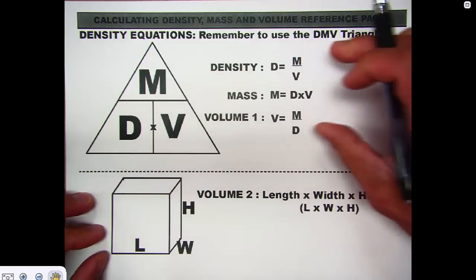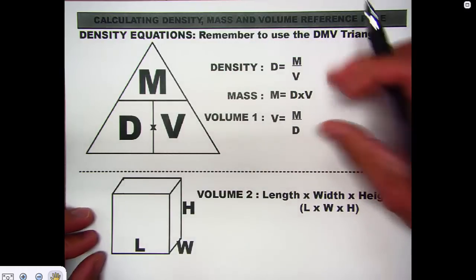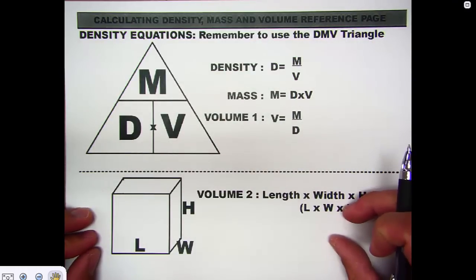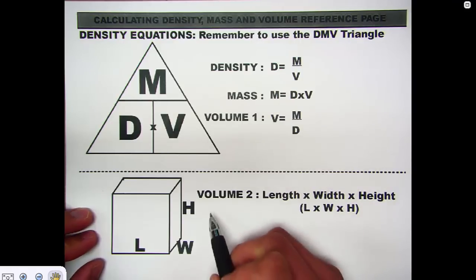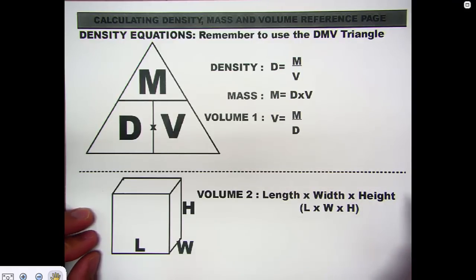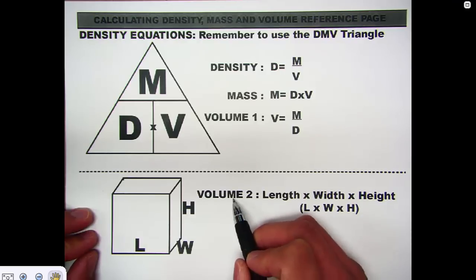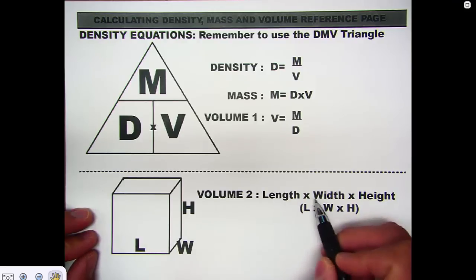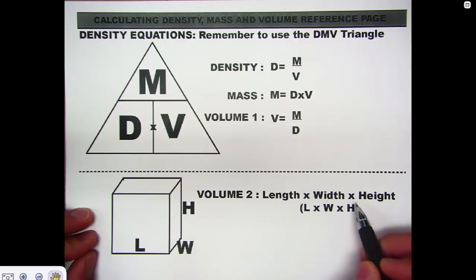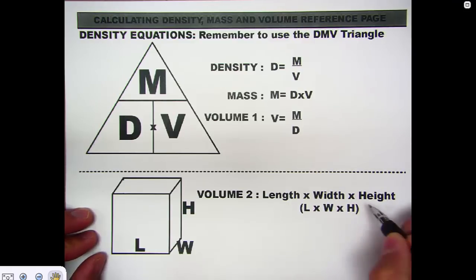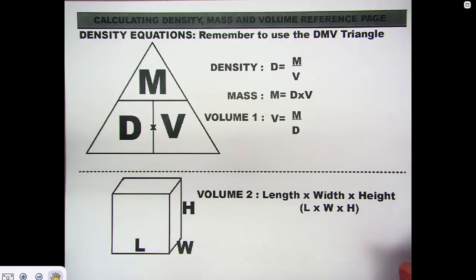Those are the top three equations you should know, but the second volume equation is important too. You may not always be given mass or density — you may be given dimensions like length, width, and height. Volume is also equal to length times width times height, or L times W times H. This is the second equation you can use to solve for volume.